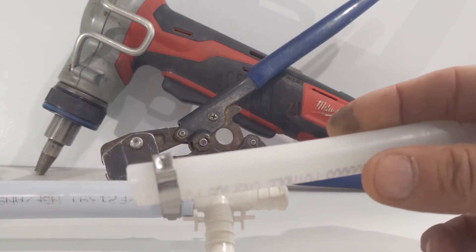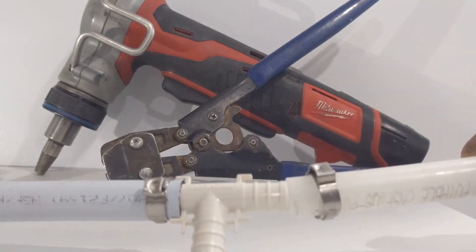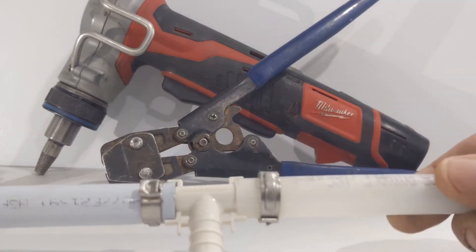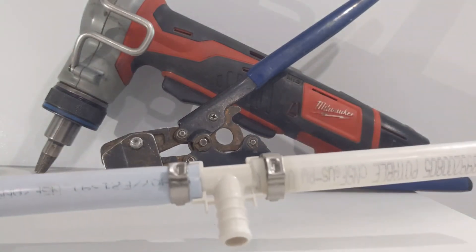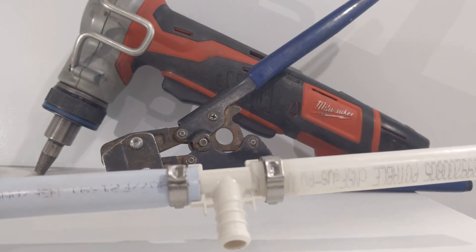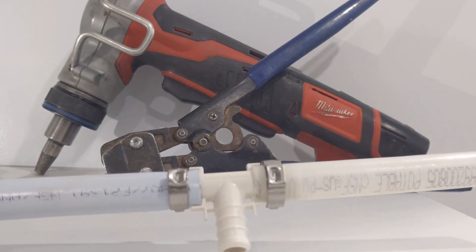Now another advantage is PEX-A can fit on PEX-B. You can use the crimp style on PEX-A piping. Now if you have PEX-B piping, you can't use the expander.